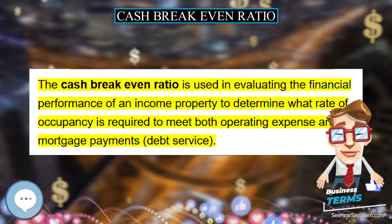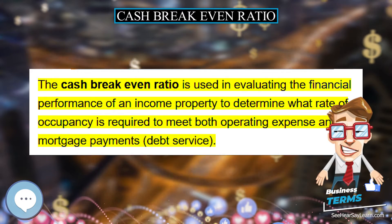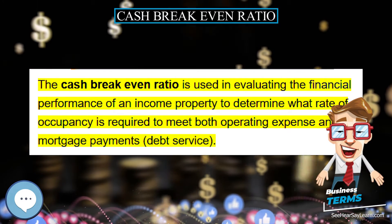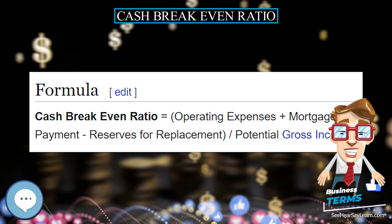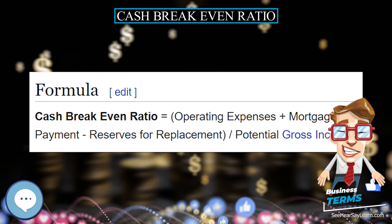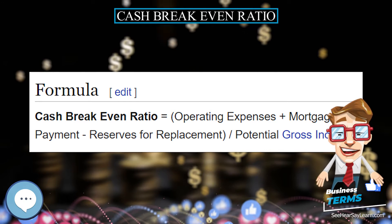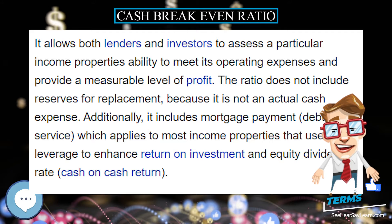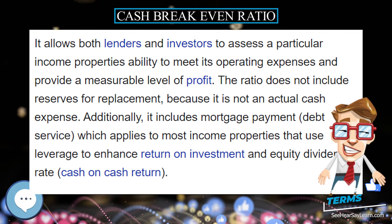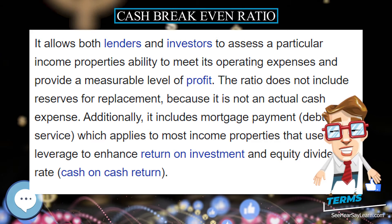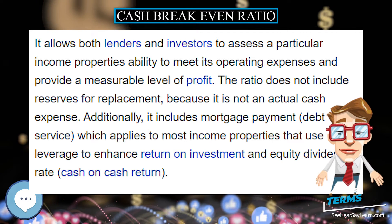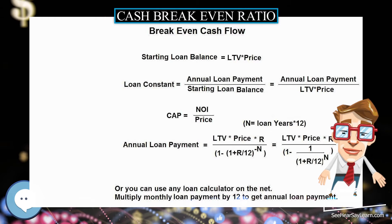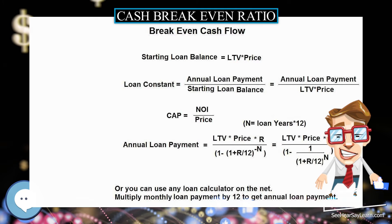The formula: cash break-even ratio equals operating expenses plus mortgage payment reserves for replacement, divided by potential gross income. It allows both lenders and investors to assess a particular income property's ability to meet its operating expenses and provide a measurable level of profit.